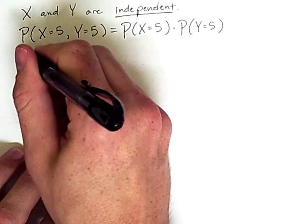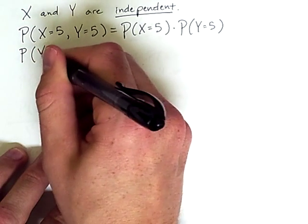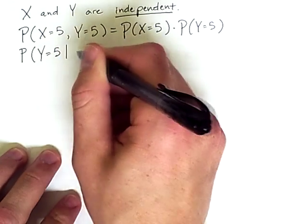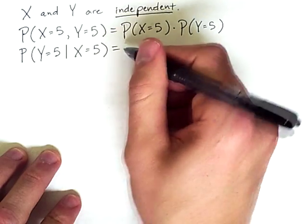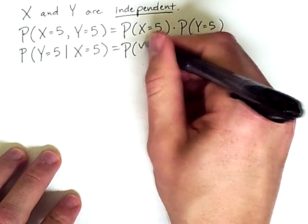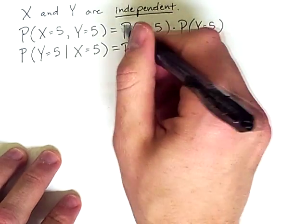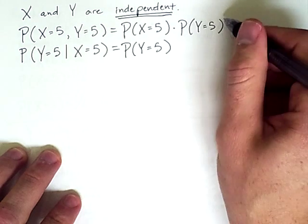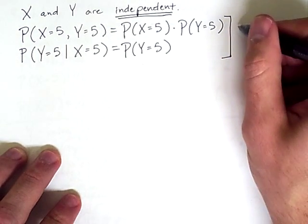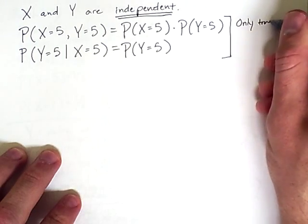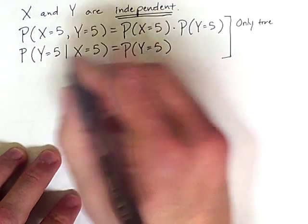Likewise, the probability of the outcome Y equals 5 given that X equals 5 is simply equal to the probability of Y being equal to 5. This is also because of independence. So these are general facts that you should memorize, but they are only true when the two events are independent or the two variables.